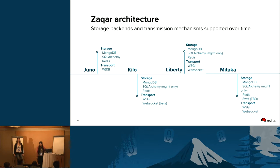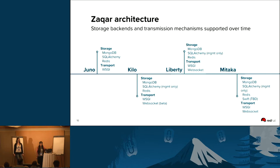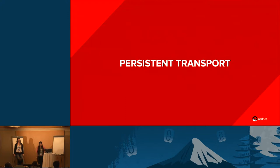This is the evolution of what SACAR has been going through. In Juno we had MongoDB, SQL Alchemy, Redis, and WebSocket as a transport. In Kilo, SQL Alchemy was removed and kept only for management, and we added WebSocket in beta. In Liberty, WebSocket was fully functional. For Mitaka, we hope to add Swift as the storage backend. Now I'll hand it over to Victoria to talk about persistent transport.